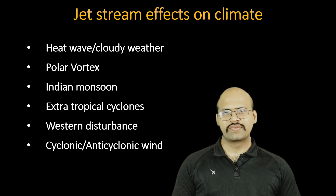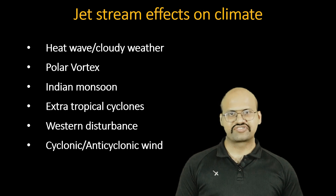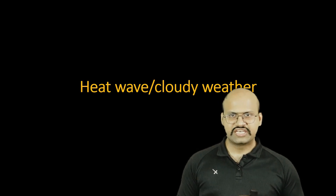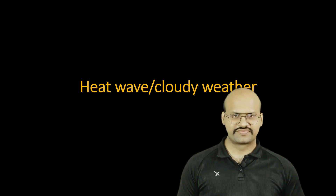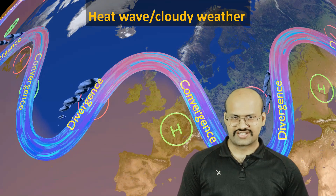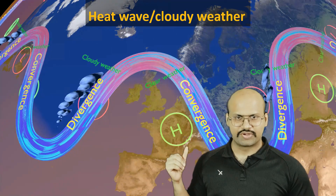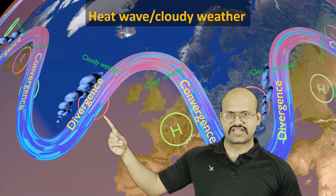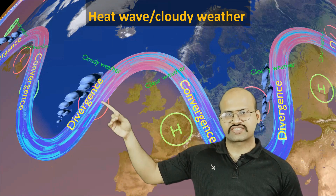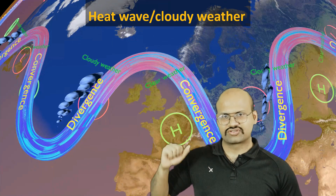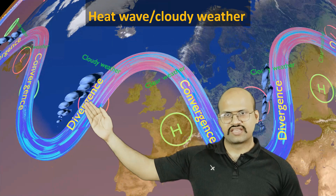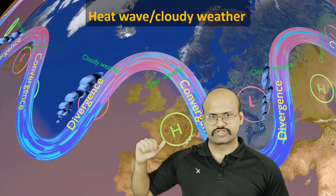Let's see one by one the effects of jet stream on different climates. First we will start with heat wave and cloudy weather. There is a high pressure region below the southward extension of the jet stream where convergence occurs, and a low pressure region below the northward extension where divergence occurs. Here we see clear sky, and here we see cloudy atmosphere.